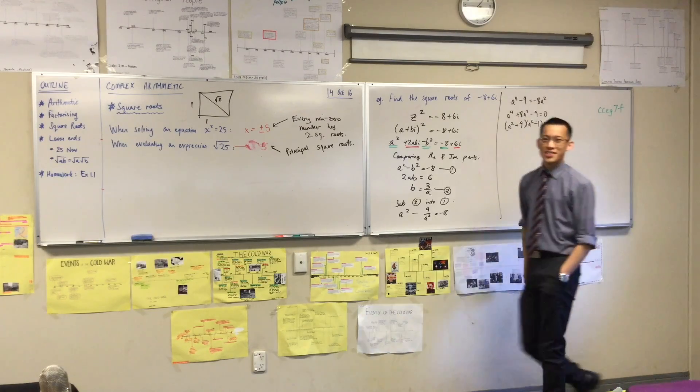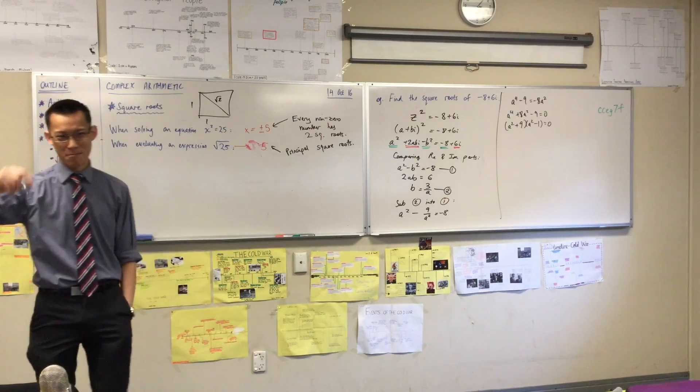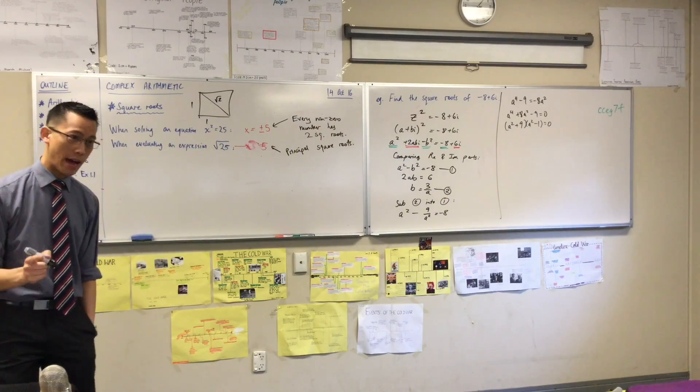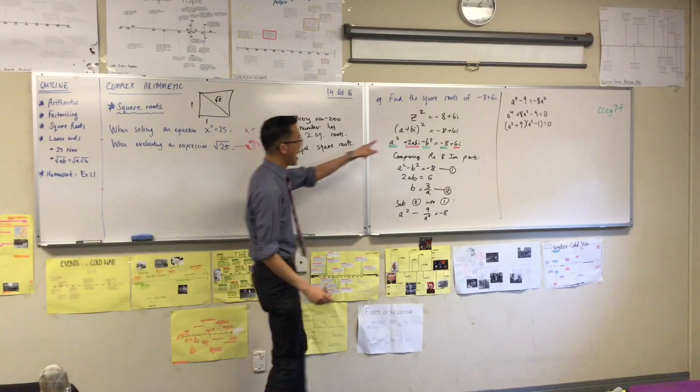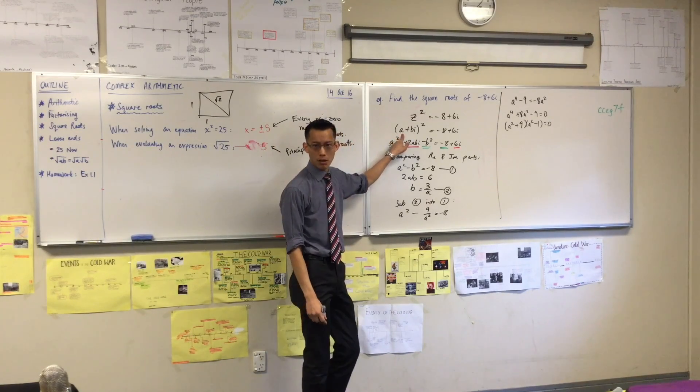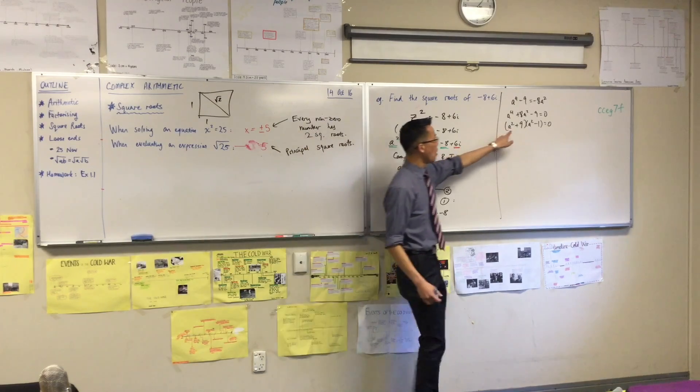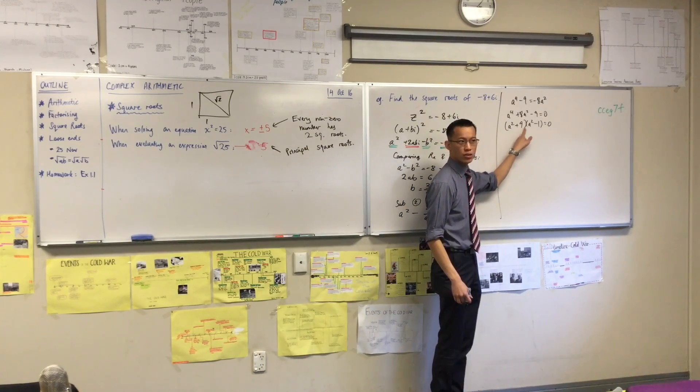Now, you know all this fancy stuff about complex factorization now. So it might be tempting to say, aha, I can bring i's in here. But think back. Think back. The a and the b are these two things, right? a is a real number, right? It has to be. I mean, that's the real part, right? So, therefore, one of these doesn't give you solutions, which one?